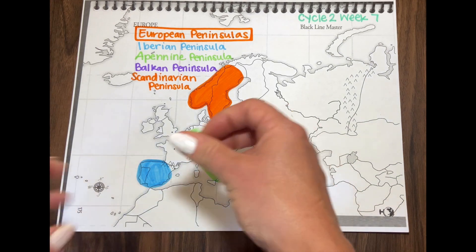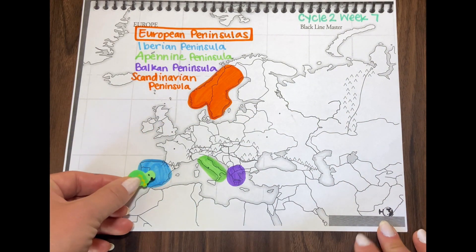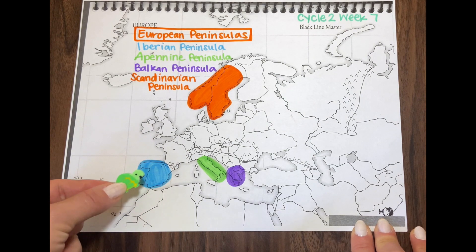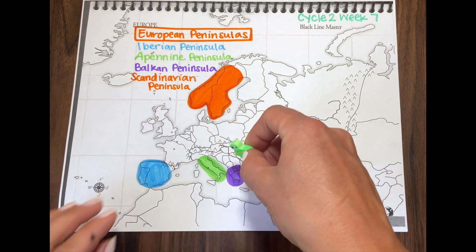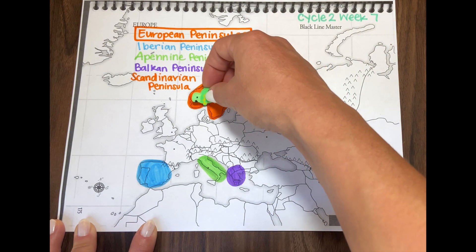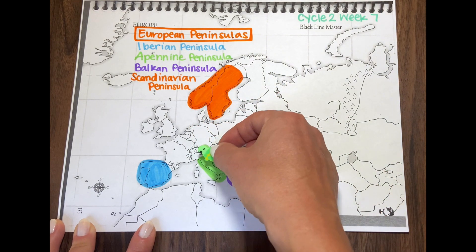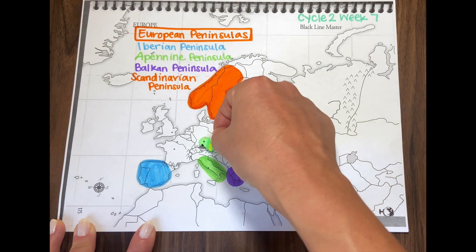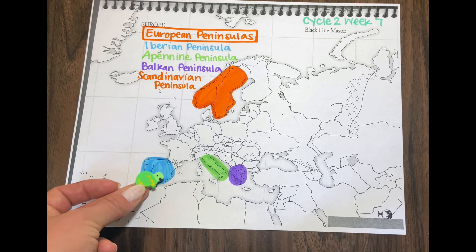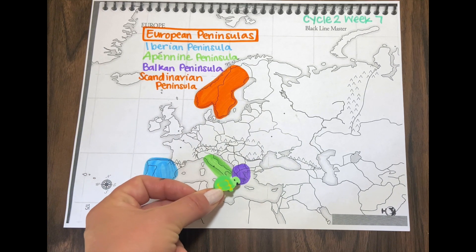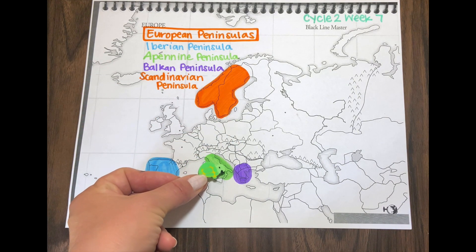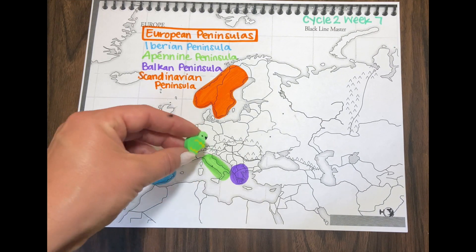Let's go through and sing a song to remember these peninsulas, starting with the Iberian peninsula. The Iberian peninsula in Spain, in Spain. The Balkan peninsula in Greece, in Greece. Up to the Scandinavian, down to the Apennine in Italy — the boot, the boot!